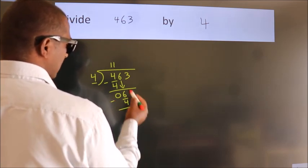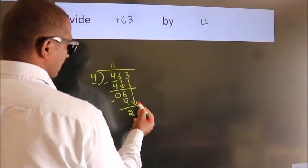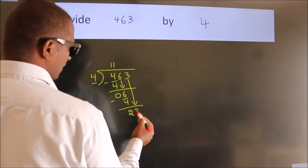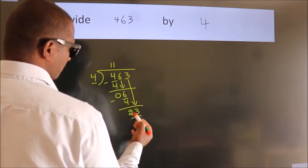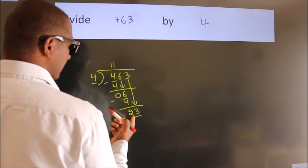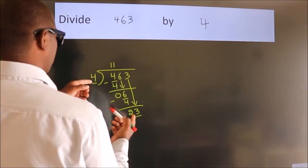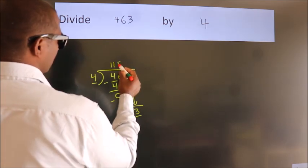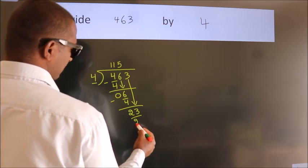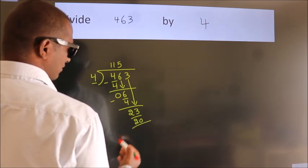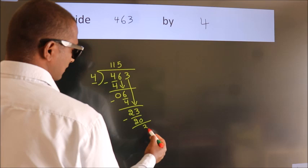After this, bring down the beside number. So 3 down. So 23. A number close to 23 in the 4 table is 4 fives, 20. Now we subtract. We get 3.